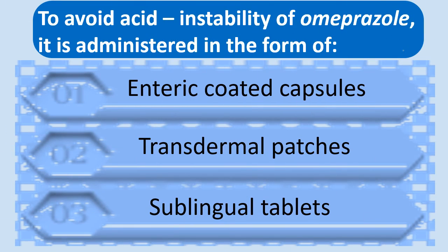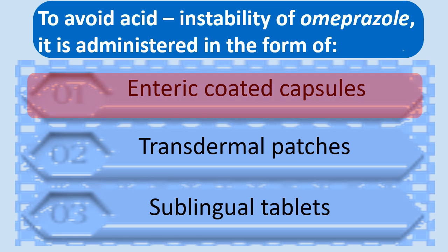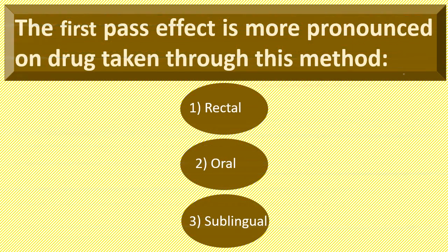To avoid acid instability of omeprazole, it is administered in the form of? Yes, in the form of enteric-coated capsules. The first-pass effect is more pronounced on drugs taken through which method? Yes, it is more pronounced on drugs taken through the oral route.